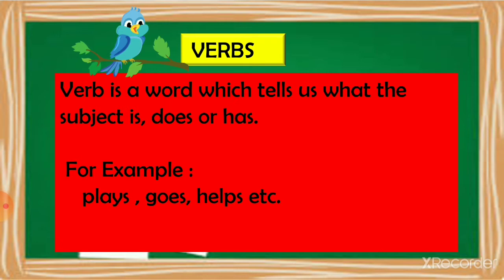In all these three sentences, the first sentence has a verb that tells us what the subject is — Astha is a girl. In the second sentence, the verb tells us what the subject does — Astha plays badminton. And in the third sentence, the verb tells us what the subject has — Astha has golden hair.